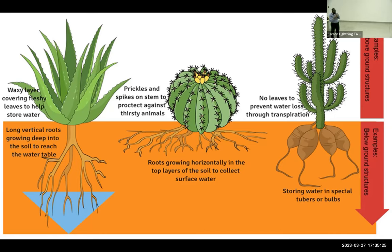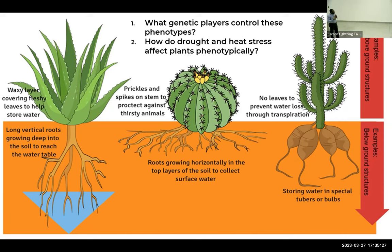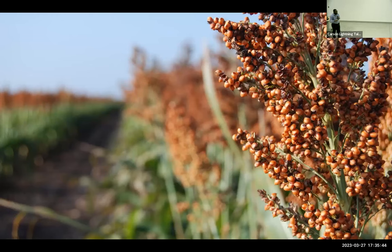So looking at all of these phenotypes, the first question I'm asking in my research is: what are the genetic players that control all of these phenotypes we see? And the second question is: how does drought and heat stress affect plants phenotypically? To answer this research question, I've chosen an important cereal called sorghum. Some of you might not have heard about sorghum, but I'd love to tell you about it today.